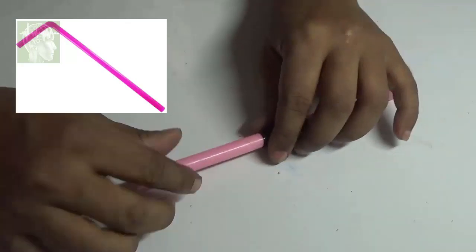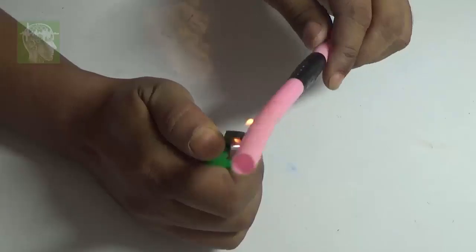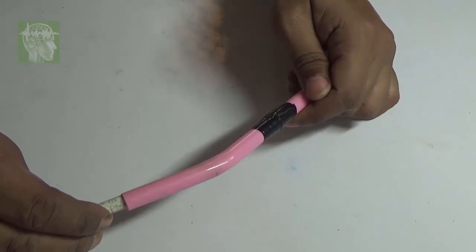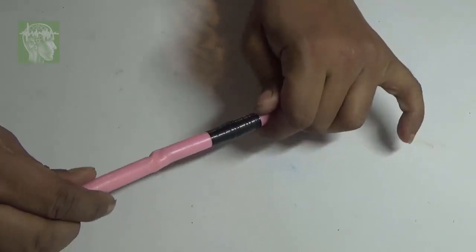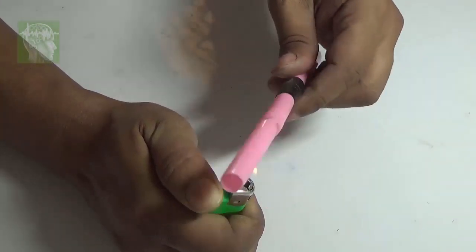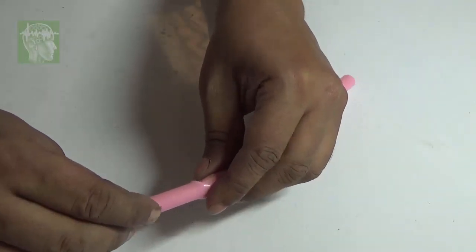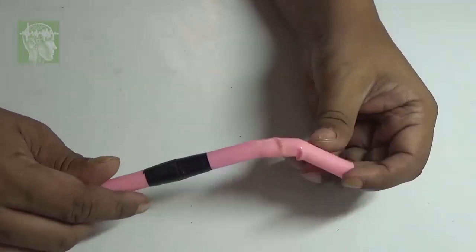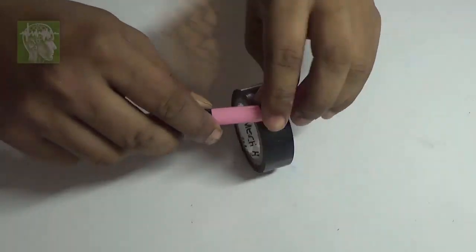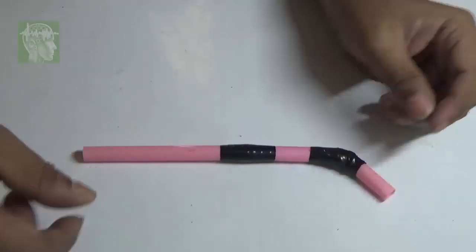For this you need a tube. You can use a juice straw also. I'm going to bend the tube, so I will just heat it up and with the help of a pencil, I'll bend it. I will bend it in two places. Thus I will get this shape. You can get some wrinkles here, just put some tape to cover it.